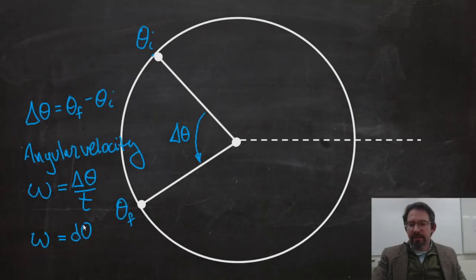It looks like a curvy w, and that's the change in theta divided by how long it takes to change that theta. So you might also know, if you want to describe it calculus-wise, that's d theta dt.